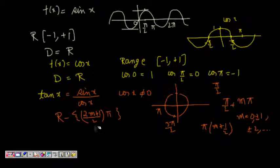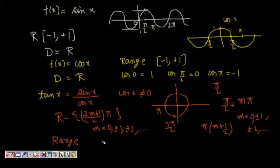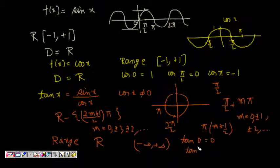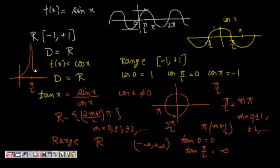So tan x is defined for those values where m = 0, ±1, ±2, etc. The range of tan x is the whole of ℝ — it goes from −∞ to +∞. For example, tan 0 = 0 and tan(π/2) = ∞, so between 0 and π/2 the function rises to infinity.